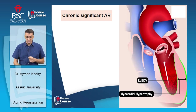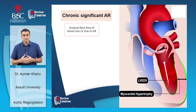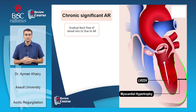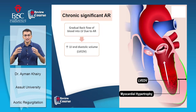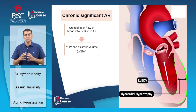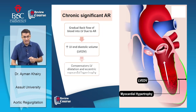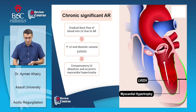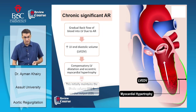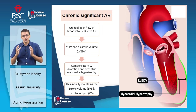In chronic severe aortic regurgitation, there is gradual backflow of blood from the aorta into the left ventricle, increasing the left ventricular end-diastolic volume. This leads to compensatory left ventricular dilatation and eccentric myocardial hypertrophy, which initially maintains stroke volume and cardiac output.